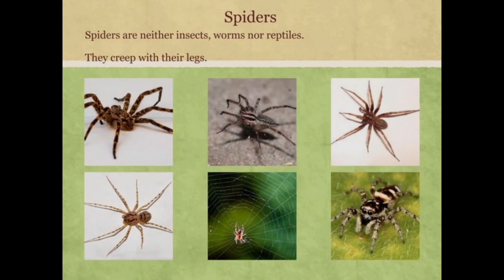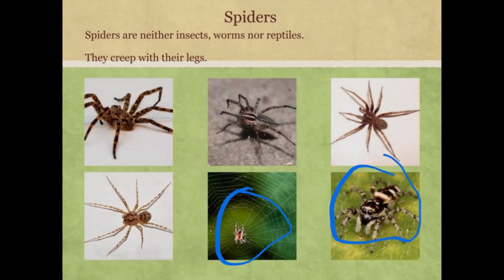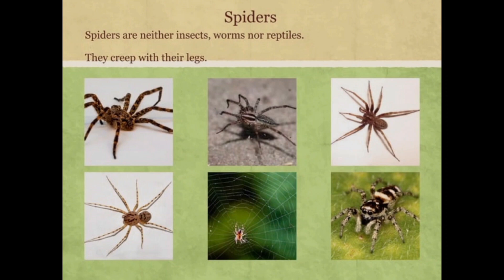They are arthropods and creep with their eight legs. Spiders can build webs — for example, these two spiders are building their nest. There are two types of spiders: the common spiders that we see in our houses, and tarantulas that we can see in the forests.